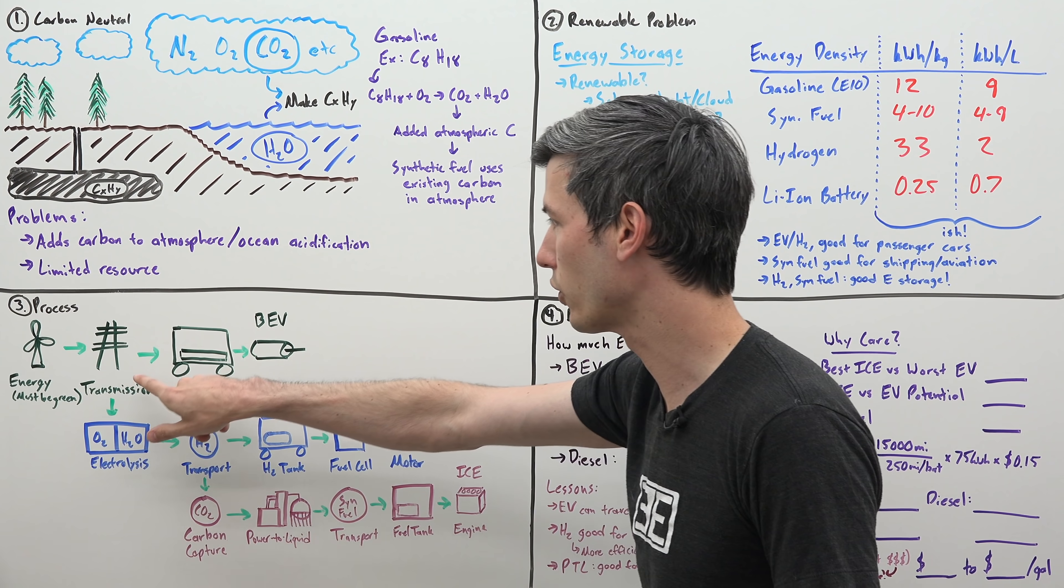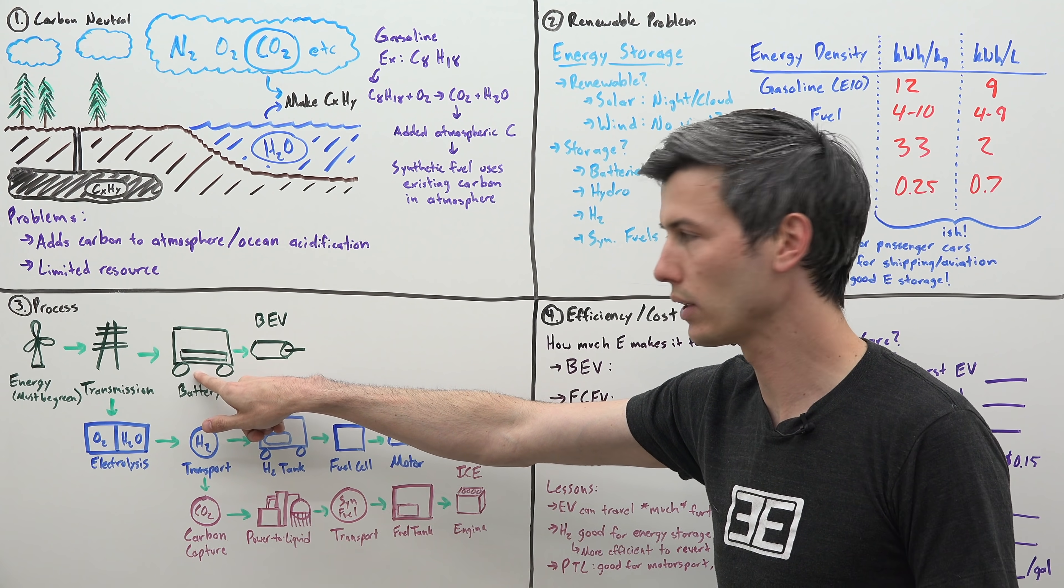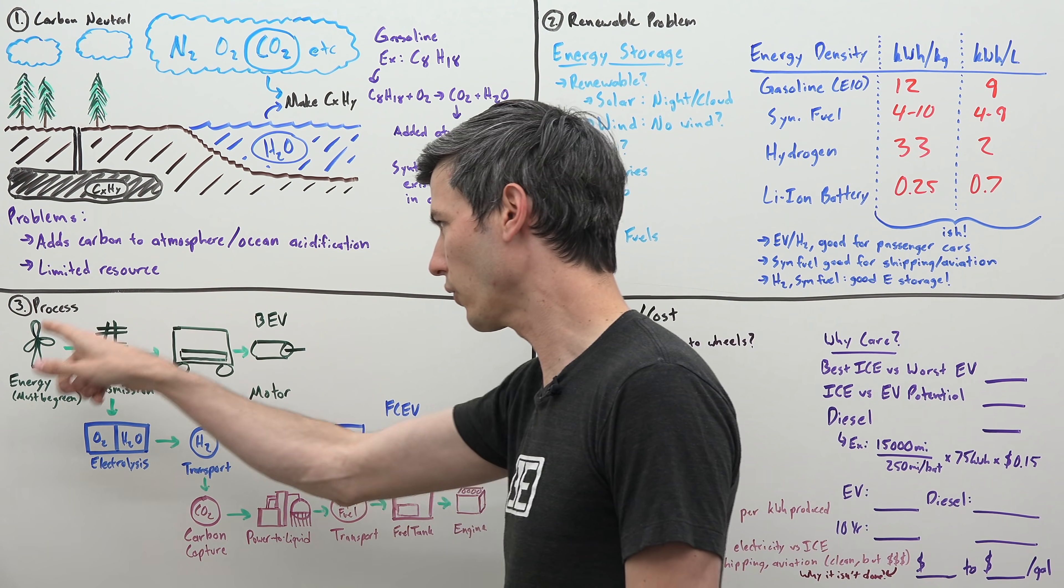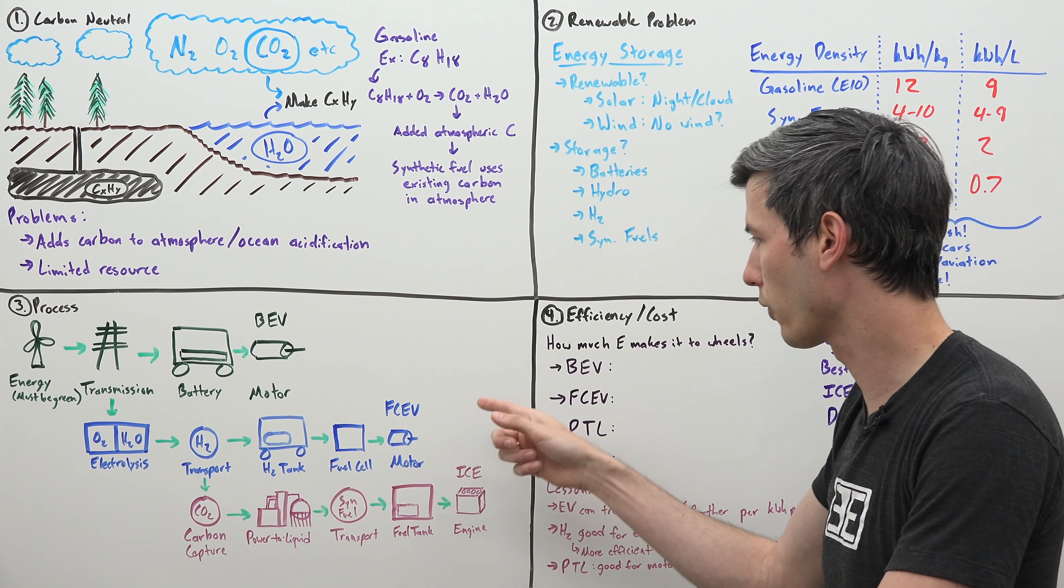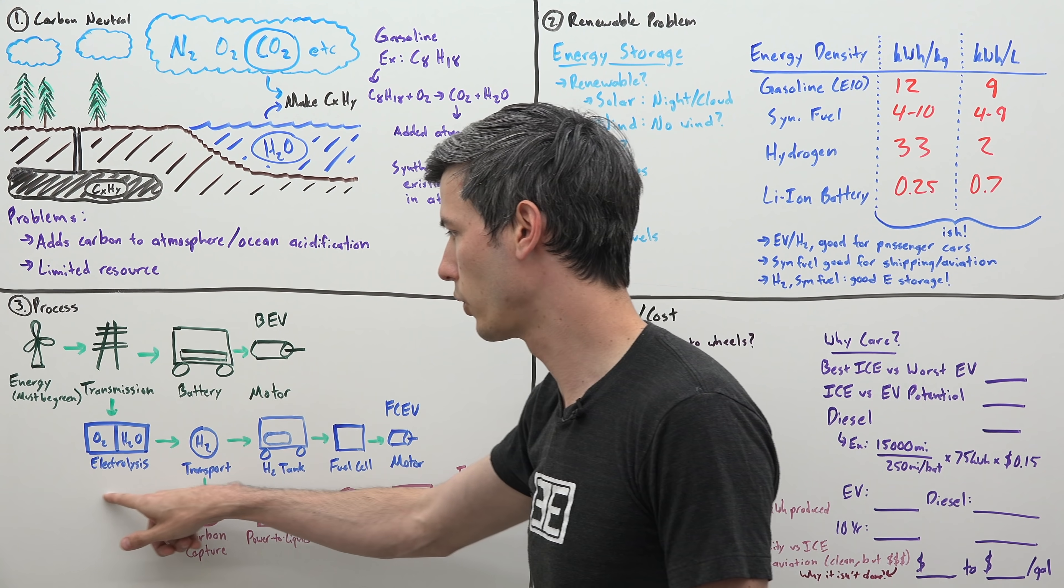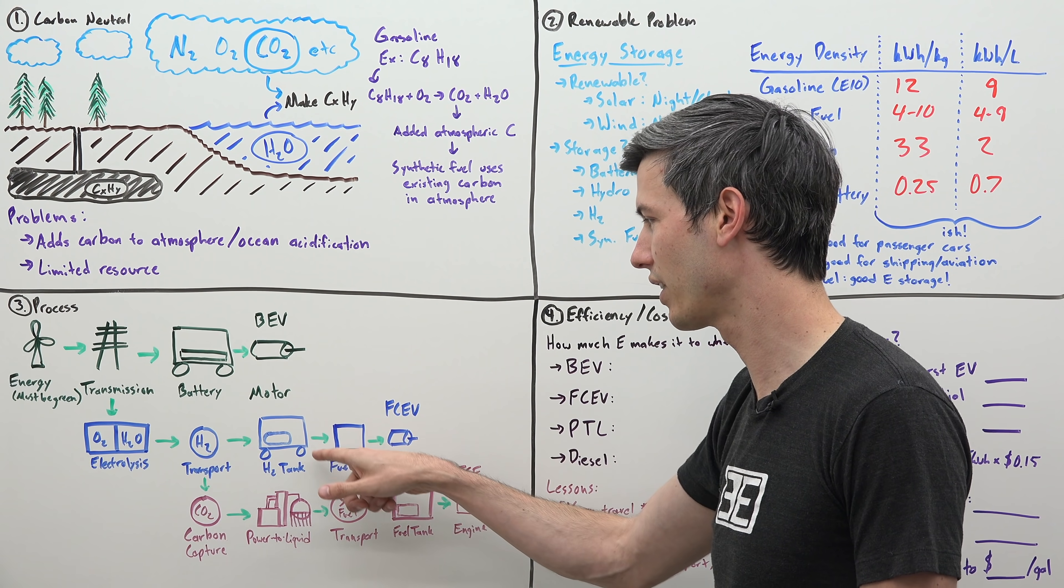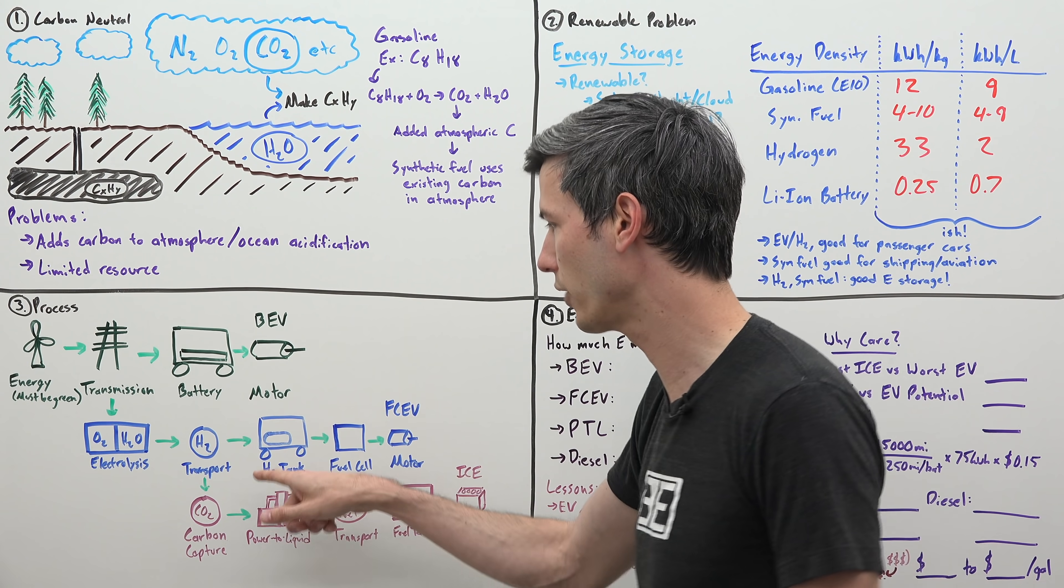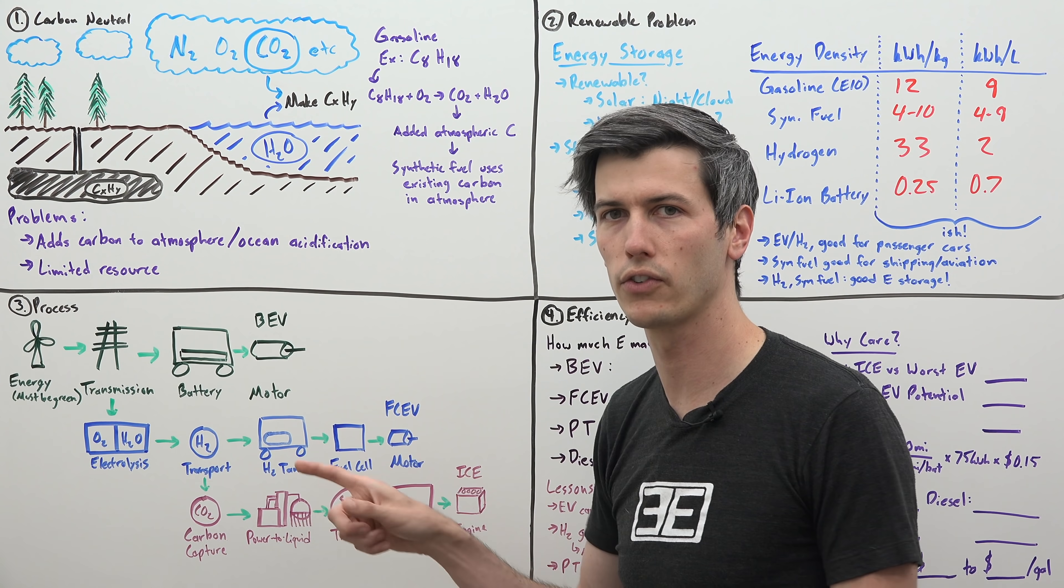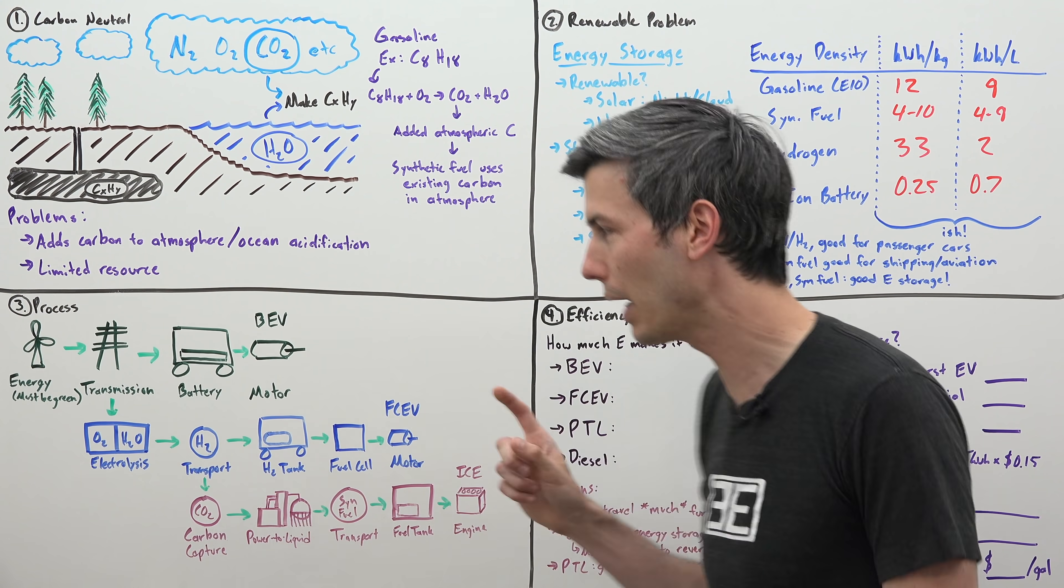Let's start with battery electric vehicles. The energy comes from a renewable resource, a wind tower. Then you have to transmit that energy. Eventually you're charging the battery of your electric car. And then the battery is sending that power to its motor in order to move the vehicle. So there's an efficiency associated with this process.